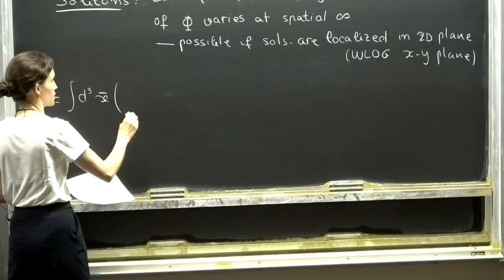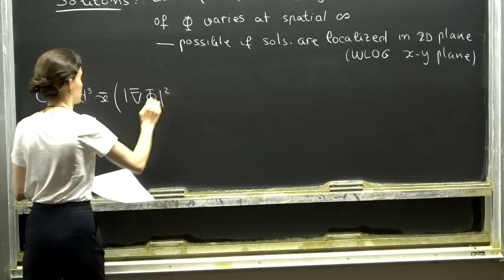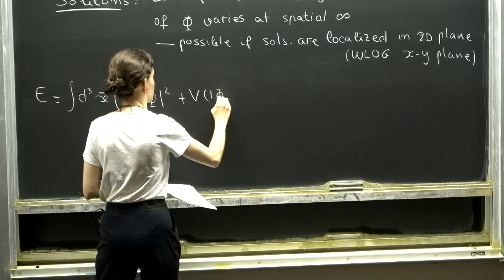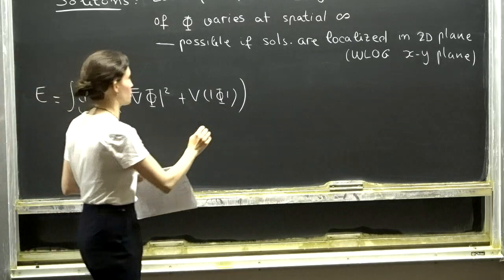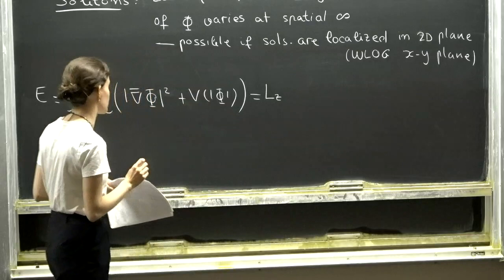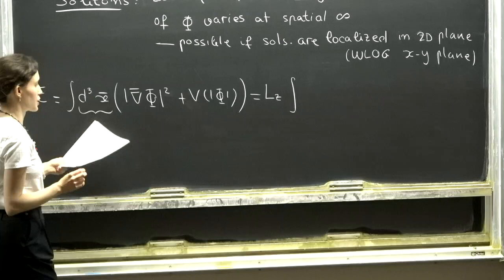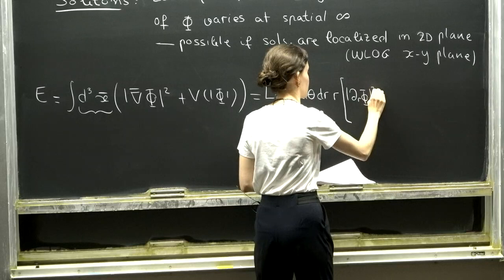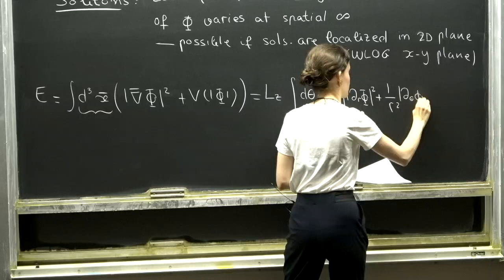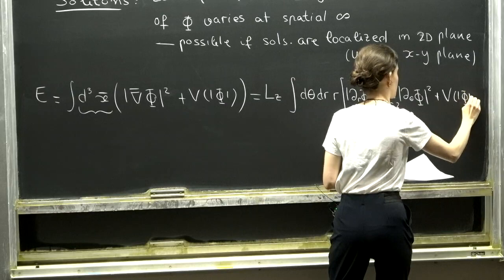Let me start by writing what the energy of a static field configuration would be — same as yesterday. One term will be the gradient of the scalar field, and then all we have is the contribution from the potential. We're looking for solutions localized in two dimensions, so I'll integrate over the z direction. The length in the z direction gives us an integral over the xy plane, which in polar coordinates gives us a radial derivative term, an angular derivative term, and the potential term.